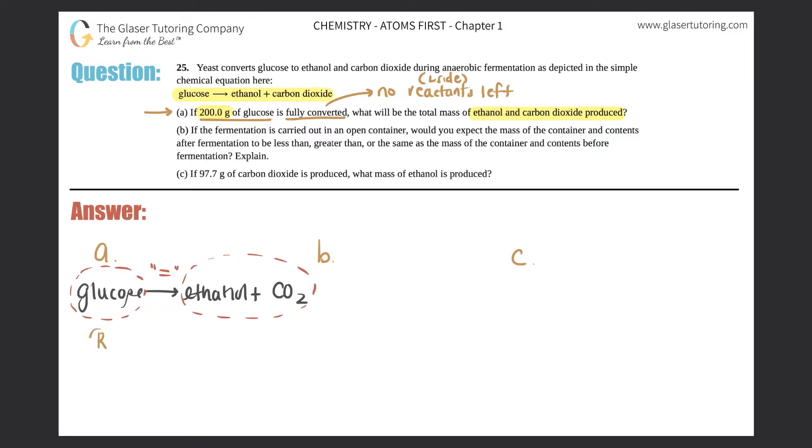So this side glucose would be the reactants and you always go into the products which is the P. So 200 grams of glucose is fully converted, so 200 grams of this, and I should put I guess 200.0.